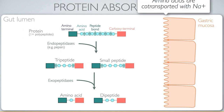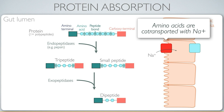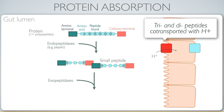Protein absorption is very similar to glucose absorption — it again takes advantage of the sodium gradient, using secondary active transport to move small molecules against a concentration gradient on the apical surface of the membrane. This occurs for amino acids, followed by facilitated diffusion across the basal membrane, after which they are transported into the circulatory system. Tri- and dipeptides are also transported similarly, but use protons (hydrogen ions) rather than sodium for secondary active transport.